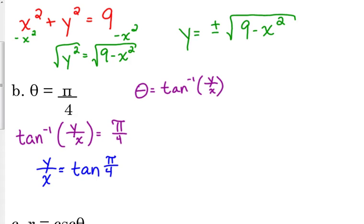That says y over x is equal to the tangent of pi over 4. Do we know the value of the tangent of pi over 4? Pi over 4 is 45 degrees. Sine and cosine have the same value, so tangent is going to be 1.